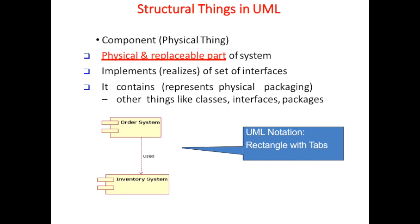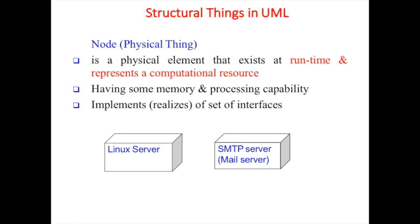For example, if I have to build an order system, I should use some inventory system component. Or if I have to shop for clothes, I would use an online shopping app component. Node is a physical thing - a physical element that exists at runtime and represents computational resources, having memory and processing capability. It implements or realizes a set of interfaces. Examples include a Linux server, HTTP server, mail server, or a university server.